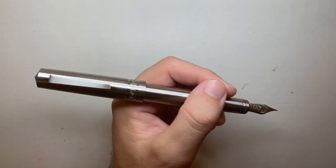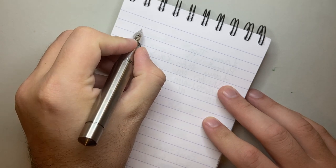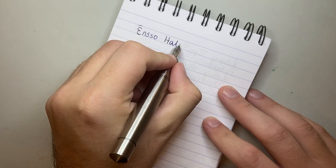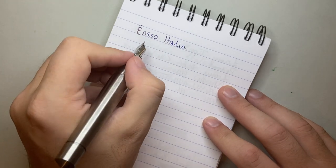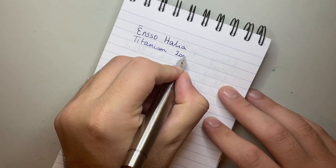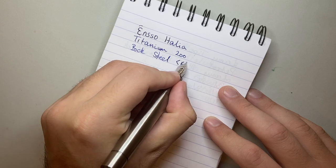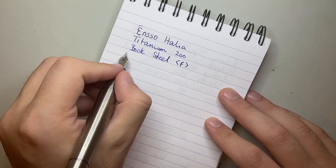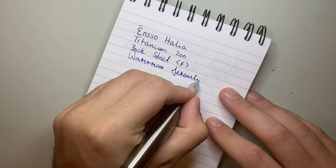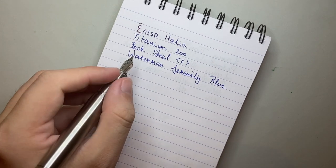Time for a writing sample now with the Enso Italia. Enso Italia. This is the titanium body. This is a limited edition of 200 pieces. The nib in this is a Bock steel fine nib. And the ink, once again, in this pen is Waterman Serenity Blue.